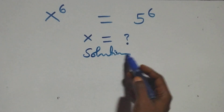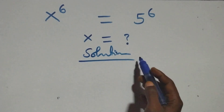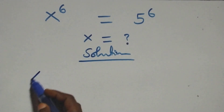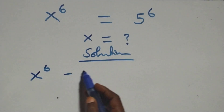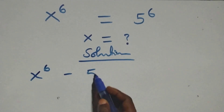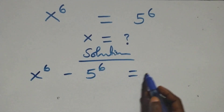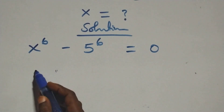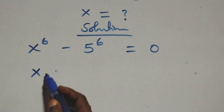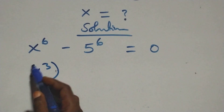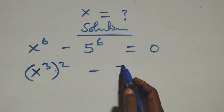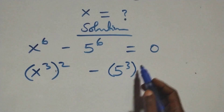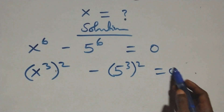Solution from here. We take 5 raised to the power 6 to the left hand side. For this we have x raised to the power 6 minus 5 raised to the power 6 equals to 0.